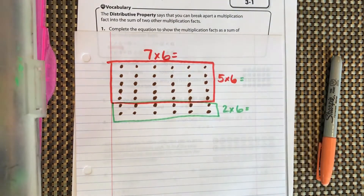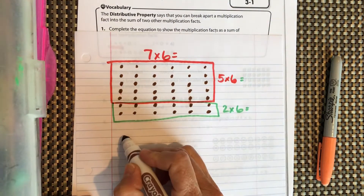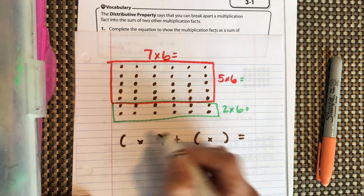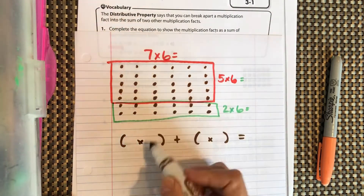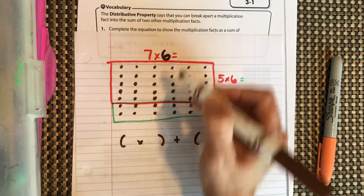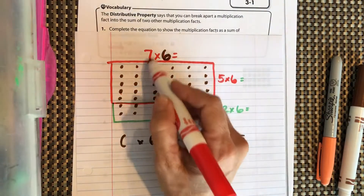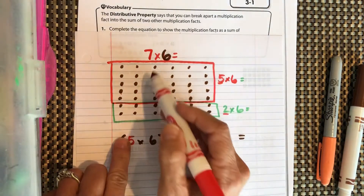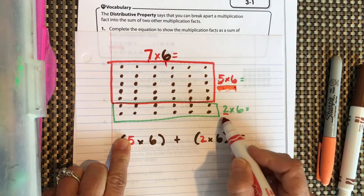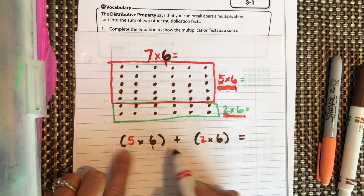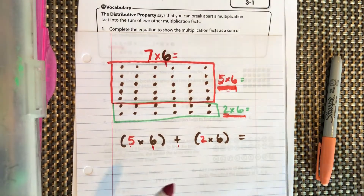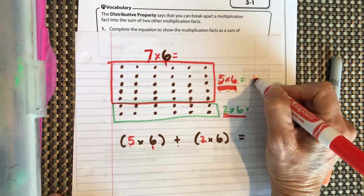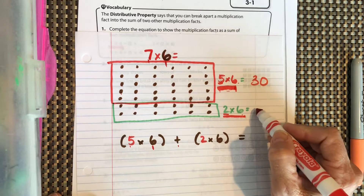They have these parentheses — parentheses plus parentheses equals the answer — and you put a multiplication sign inside each one. Our 6 stays the same, and we're going to break the 7 up into 5 and 2. So we took 7 groups of 6 and broke it into 5 groups of 6 and 2 groups of 6. Five times 6 — write that down — is 30. And 2 groups of 6 — write that down.